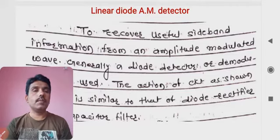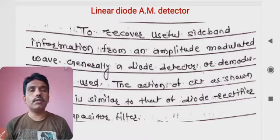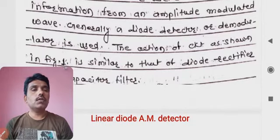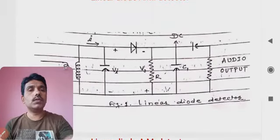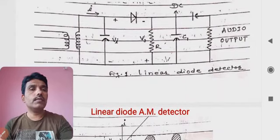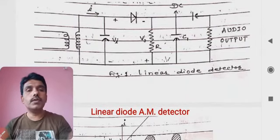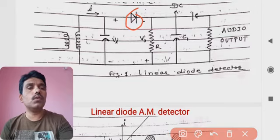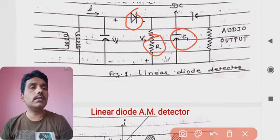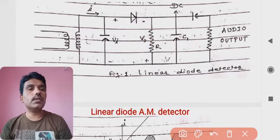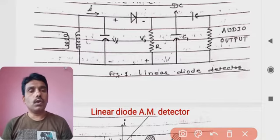Whatever the amplitude modulated signal is, the original signal is recovered — that is demodulation. The amplitude modulated signal is demodulated using this linear diode. We will see in detail how this circuit is formed, what the results are, and what the conditions are. To recover useful sideband information from an amplitude modulated signal, a diode detector is generally used as a demodulator.